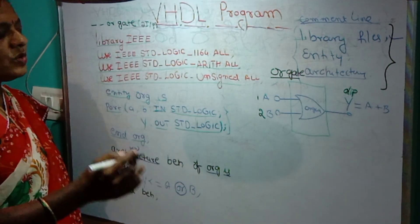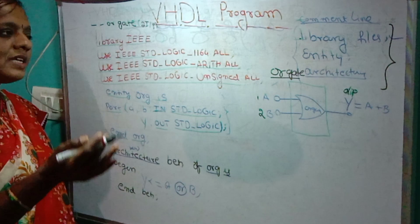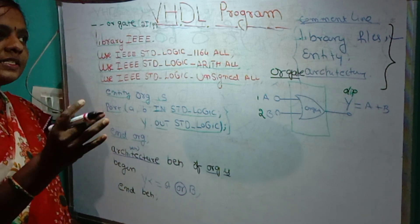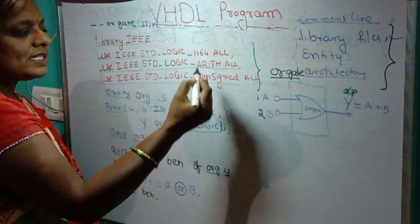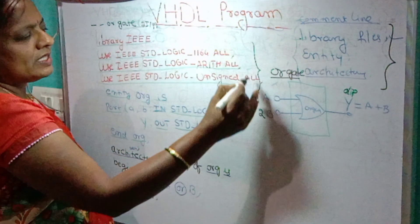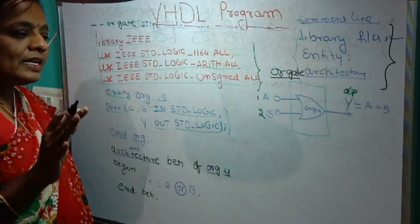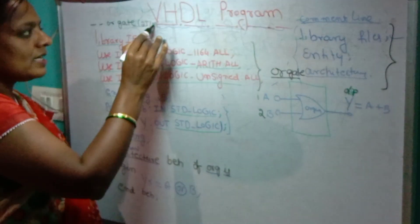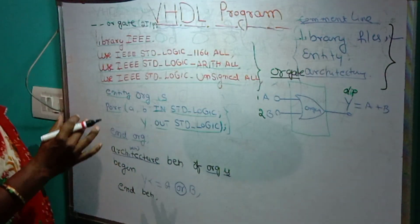According to the structure of the program, first we have to write the library files. What are the library files? The software we use to execute the program is a combination of library files, and we have to mention here which library files we are going to use to execute our program. Every VHDL program should start with four lines.